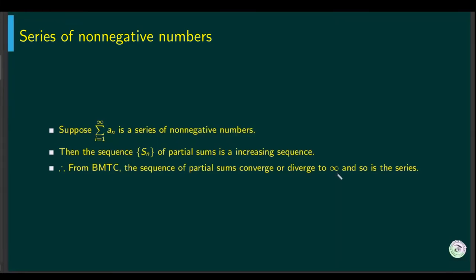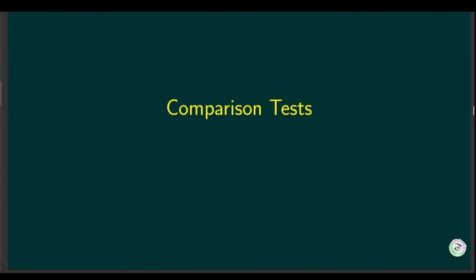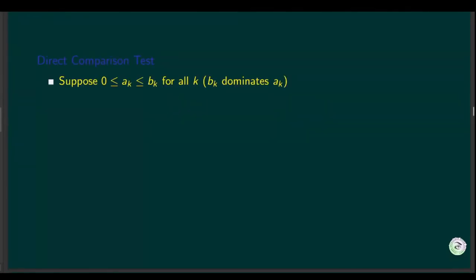Now let's go over a series of tests applicable for non-negative series. The first is called the direct comparison test. If there are two series such that each term a_k is less than or equal to b_k, and both are non-negative, we say that b_k dominates a_k.